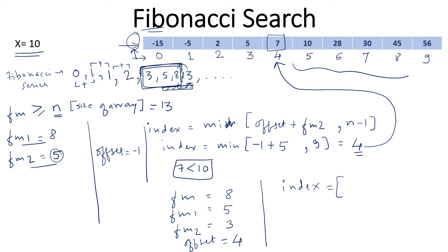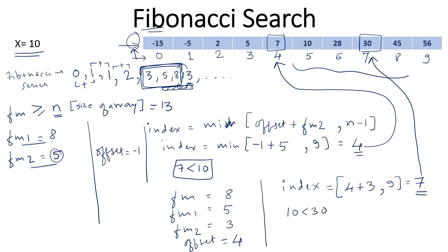In the next iteration, the index is offset plus fm2, which is 4 plus 3 equals 7. The minimum of 7 and 9 is 7, so we compare the element at index 7, which is 30. Since 10 is smaller than 30, the element 10 is definitely on the left part of the current partition, but beyond index 4.